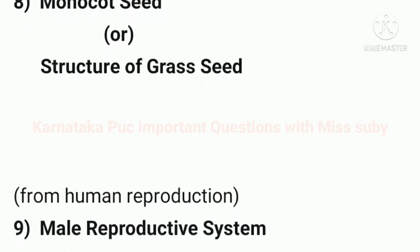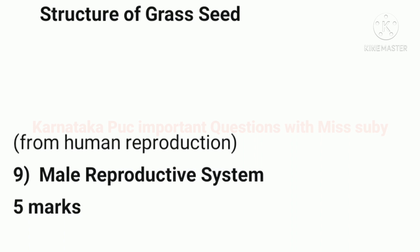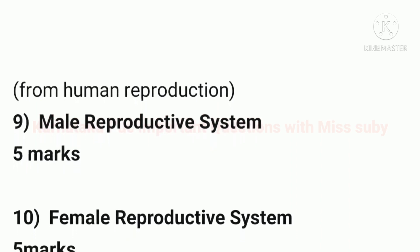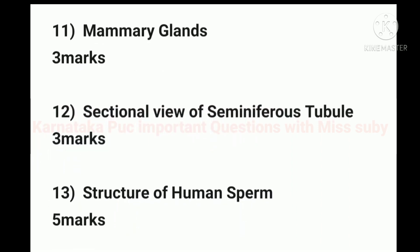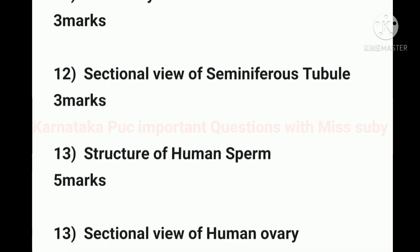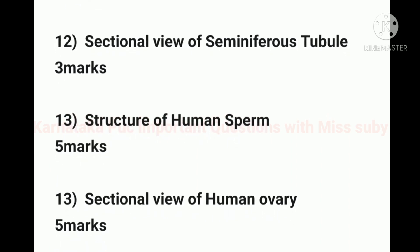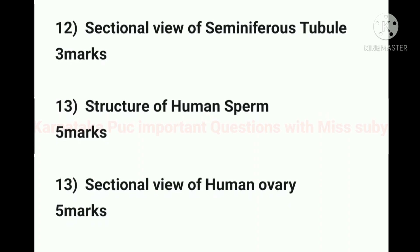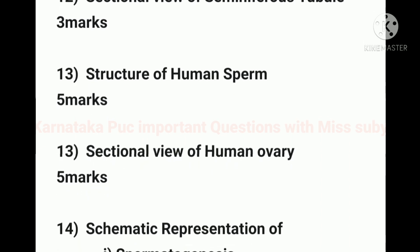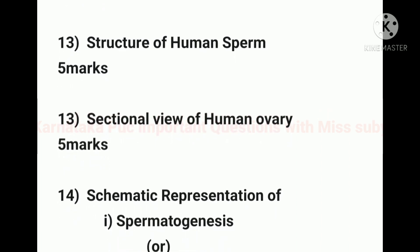Next, diagram for male reproductive system — carries 5 marks. Next, diagram for mammary glands — carries 3 marks. Next, sectional view of seminiferous tubules — carries 3 marks. Next, structure of human sperm — carries 5 marks.